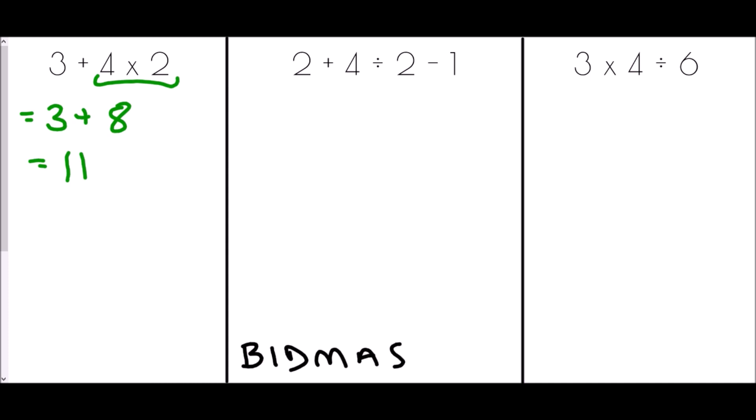If we had done the question in the order it appeared, we would have done 3 + 4 = 7, then 7 × 2 = 14 — an incorrect answer. Moving to the next example: no brackets, no indices, but yes we have a division in the centre. The 2+ and the −1 remain in position; we deal with 4 ÷ 2 = 2 first, then 2 + 2 − 1 = 3.